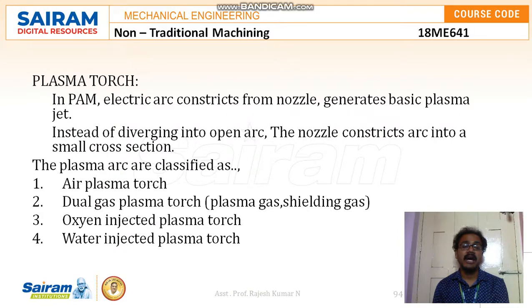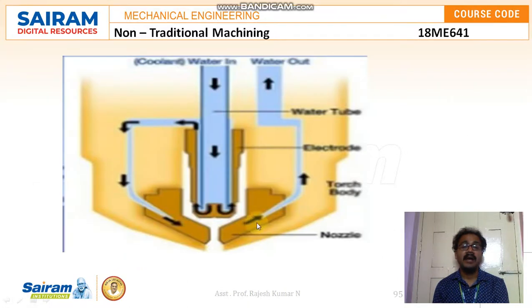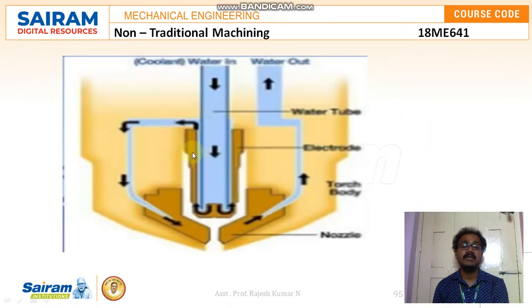The plasma torch is the third major component. In plasma arc machining, the electric arc from the nozzle generates the basic plasma jet. Instead of diverging into an open arc, the nozzle constricts the arc into a small cross section. The plasma arc can be classified as: air plasma torch, dual gas plasma torch using plasma gas plus shielding gas, oxygen injector plasma torch, and water injector plasma torch. All four types can be seen in the sketches.